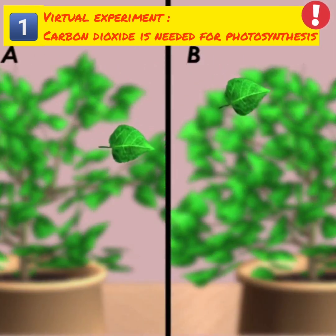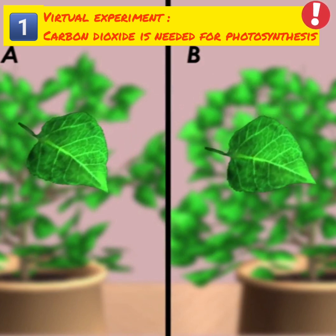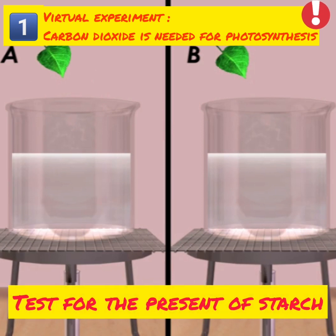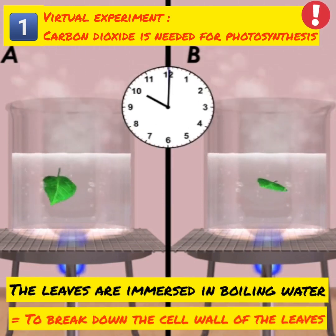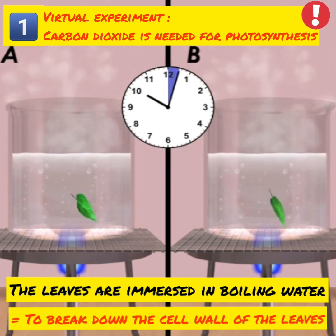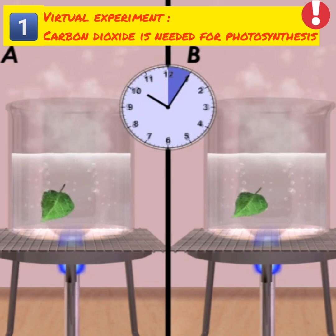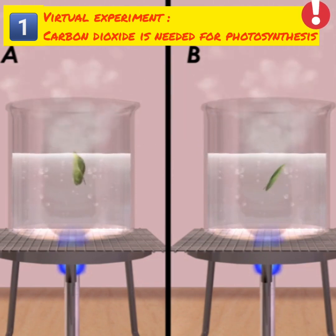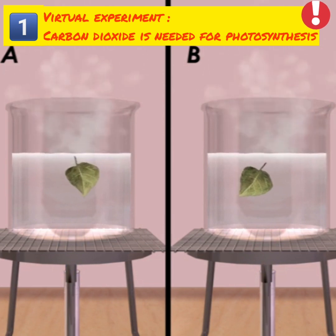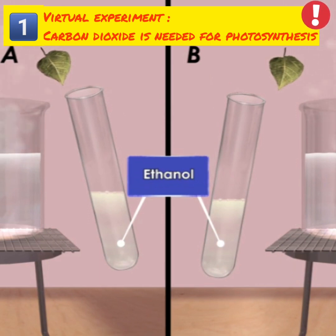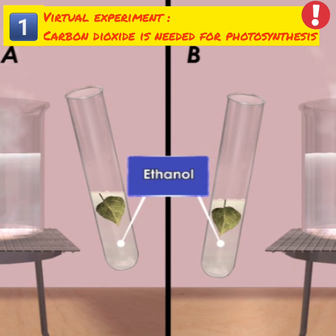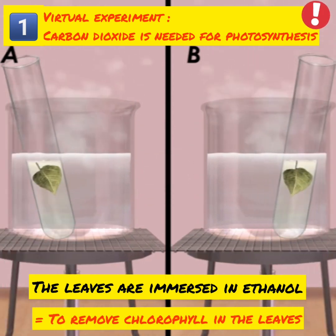Pluck a leaf from the two potted plants and test for the presence of starch. Prepare the apparatus as shown here. Immerse both leaves in boiling water for five minutes to break down the cell walls of the leaves. Then, transfer the leaves into test tubes containing ethanol and place them in the hot water to get rid of the chlorophyll in the leaves.